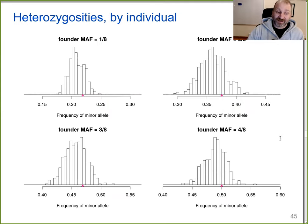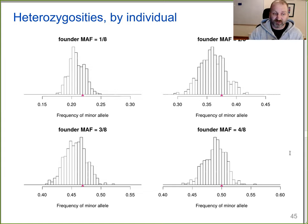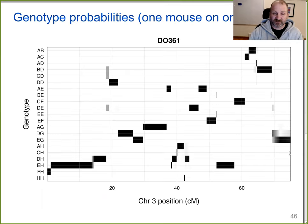You can also look at heterozygosities by individual. They are about where you'd expect them to be, with some variation, and nothing particularly unusual except that one sample DO125.